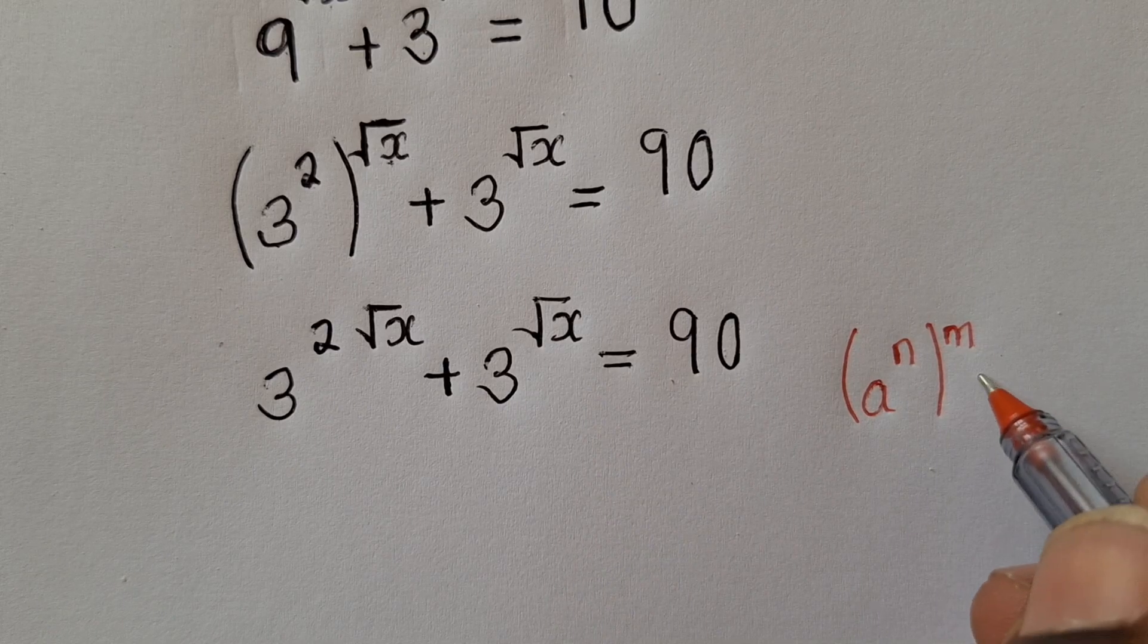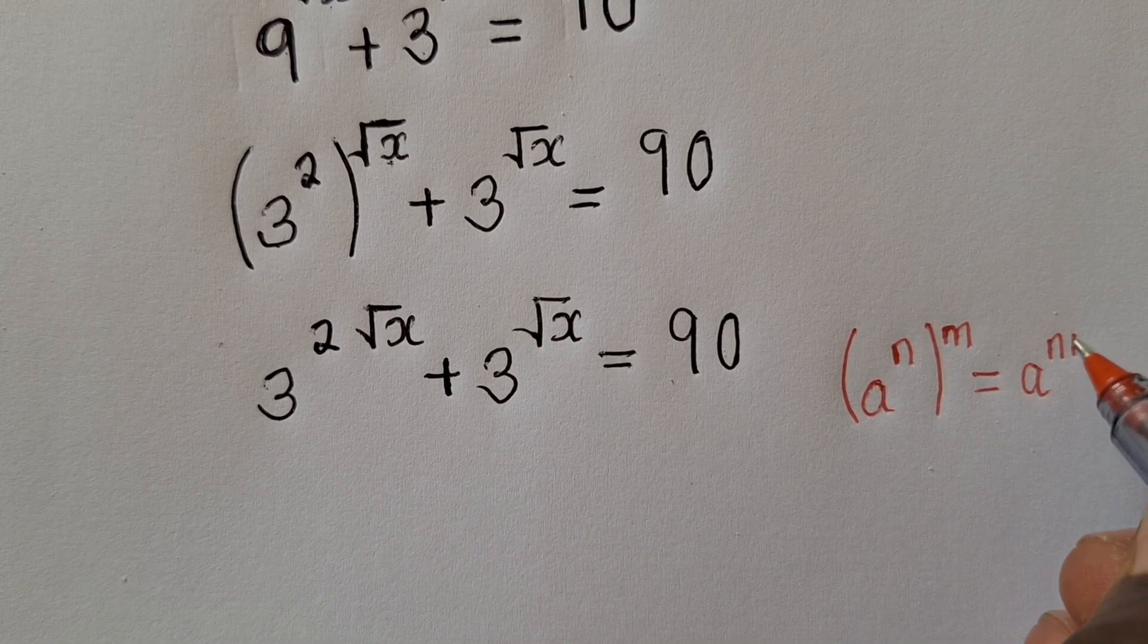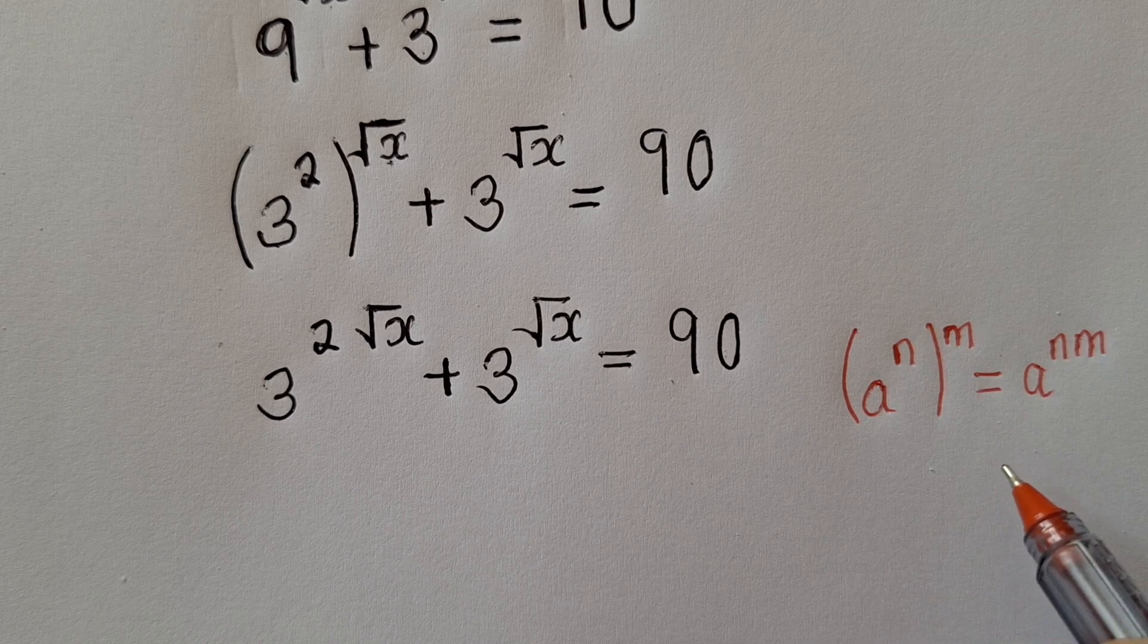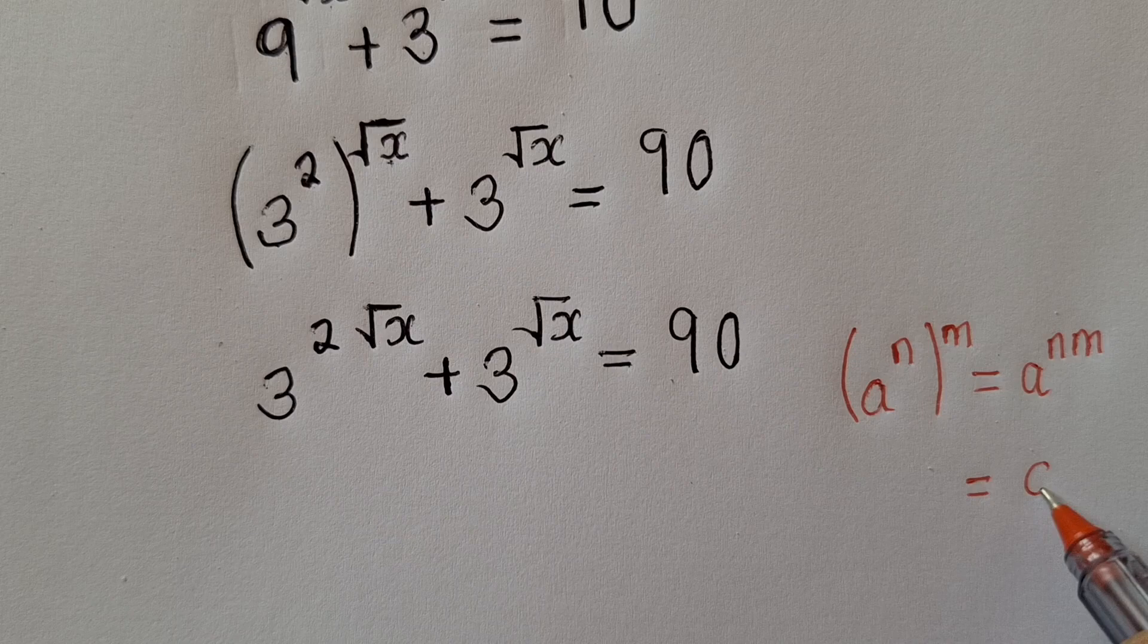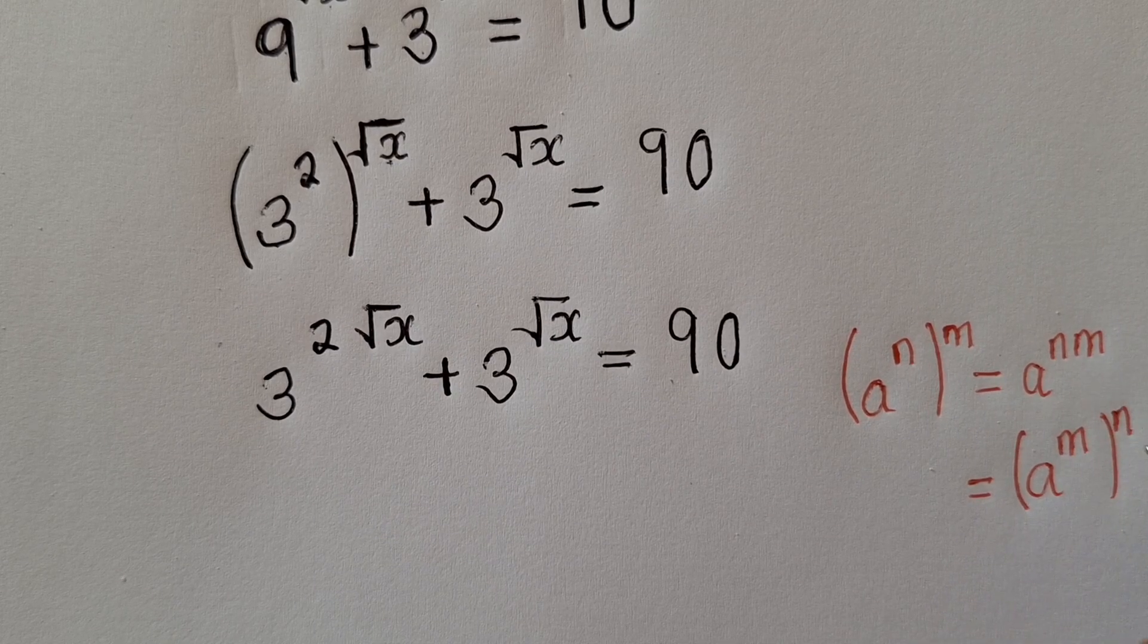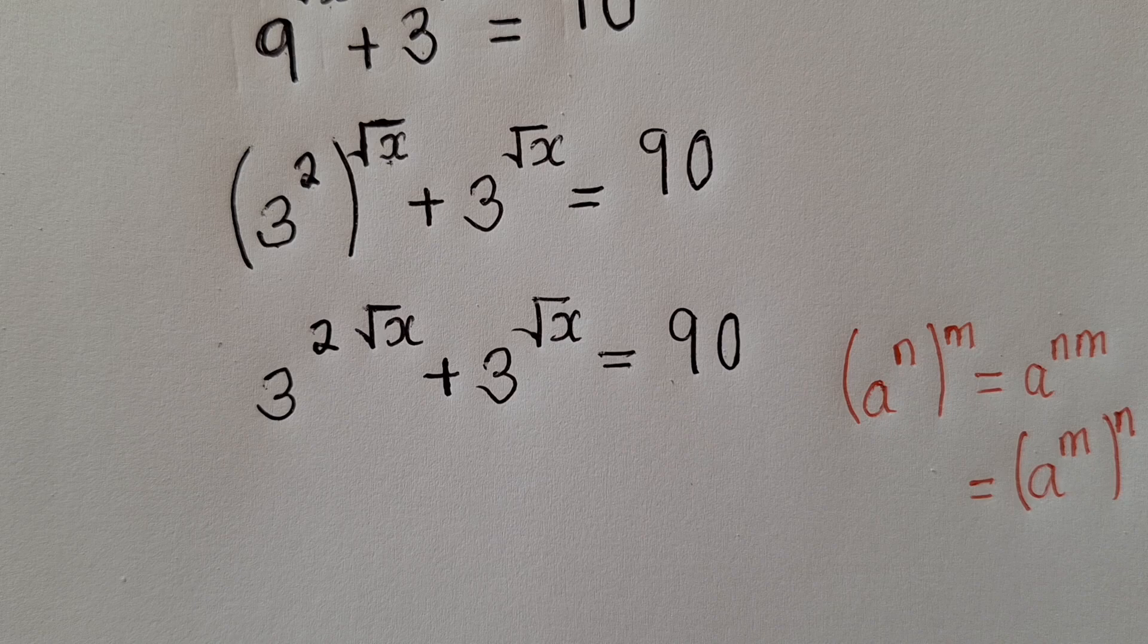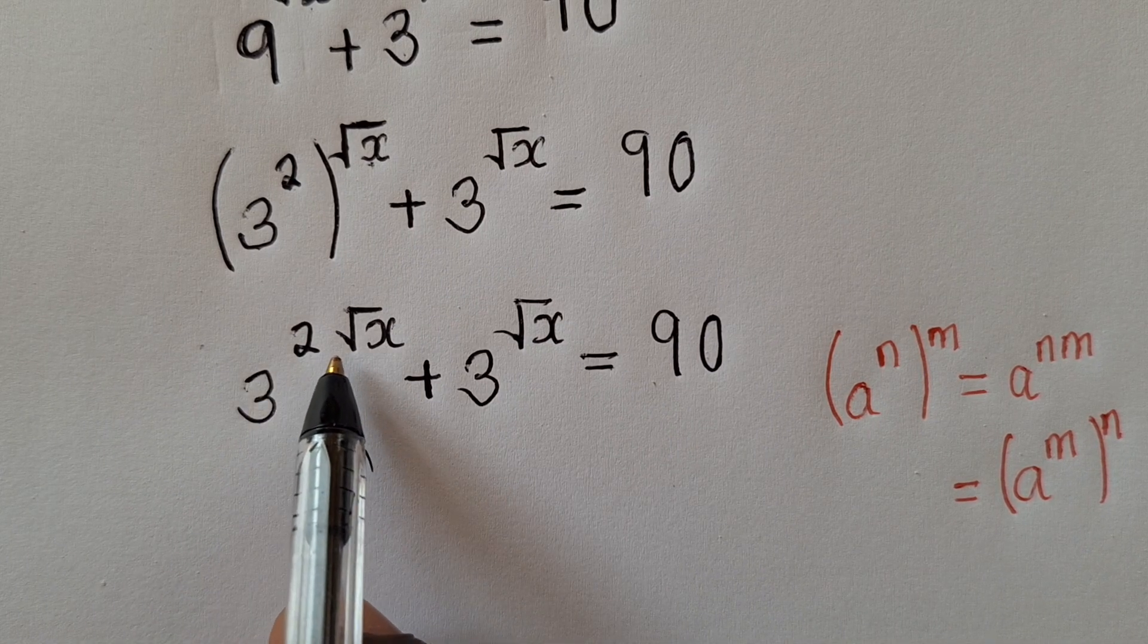Okay, so this can be written as a power n, m. Power to power you multiply. And again, it can be interchanged as a power m, n. We call this as commutative. And this is what I need to apply right here.